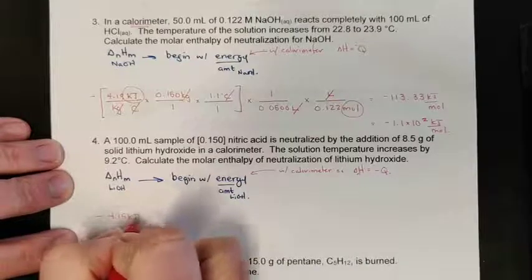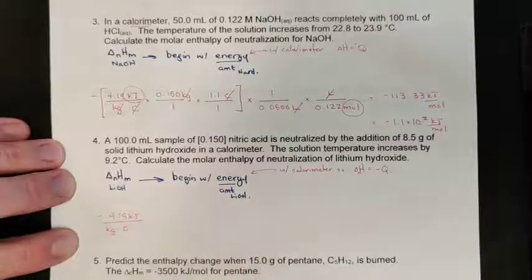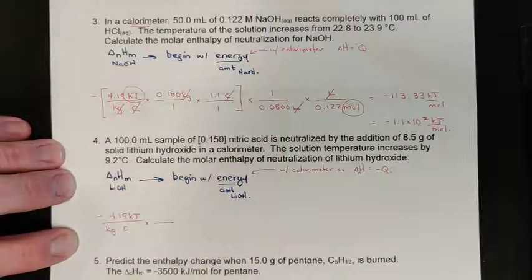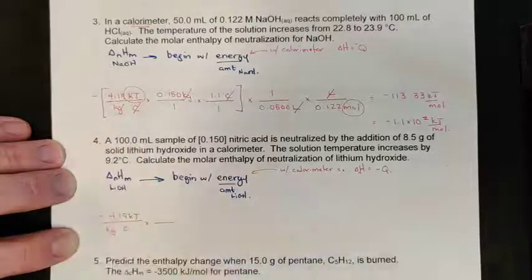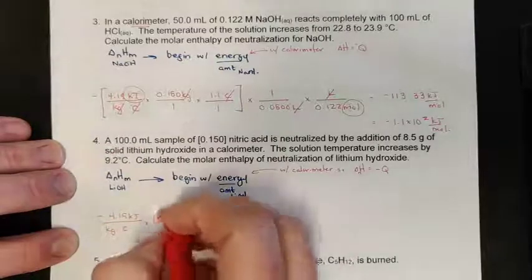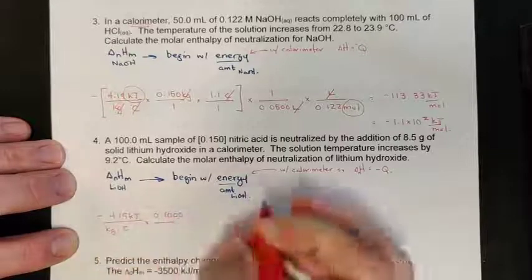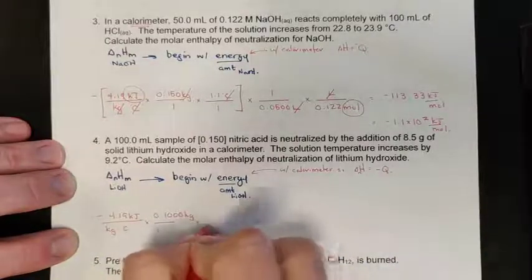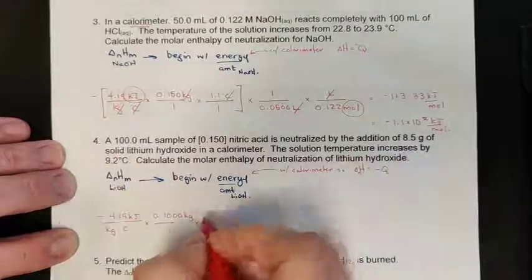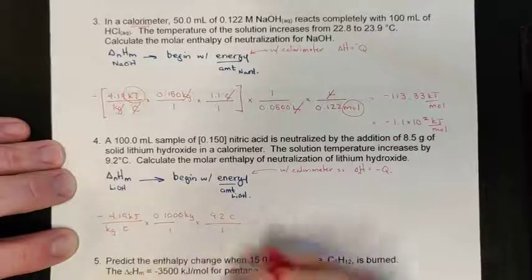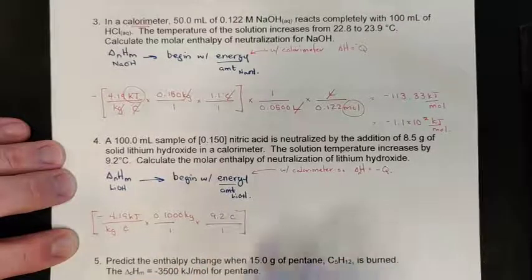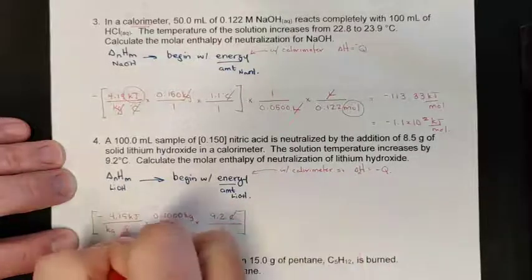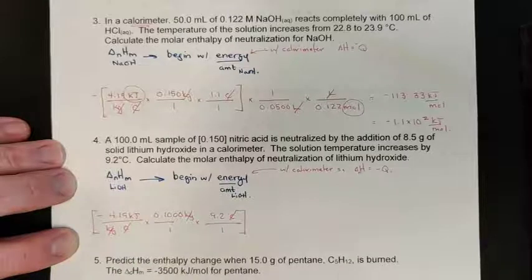I'll use the specific heat capacity of 4.19 kJ/(kg·°C) for the solution. I have 100.0 mL, treated as water, so that's 0.1000 kg in the calorimeter. The temperature changes by 9.2°C. So there is my energy as calculated by the calorimeter — q equals delta H. Kilograms cancel, giving me that energy value.